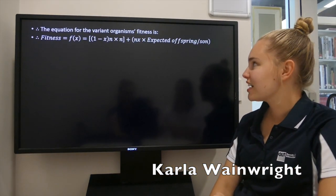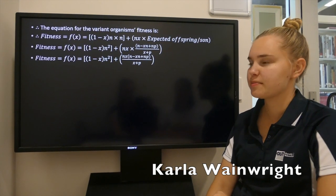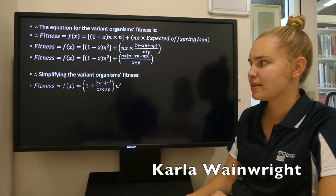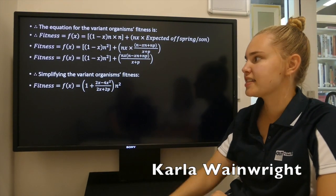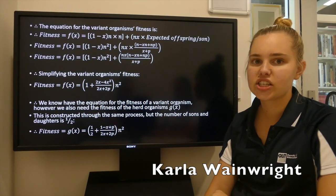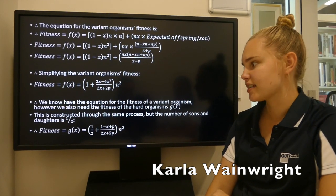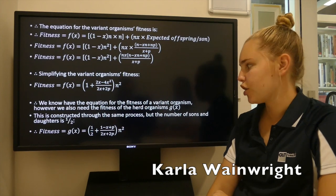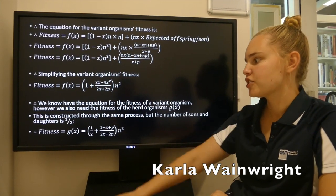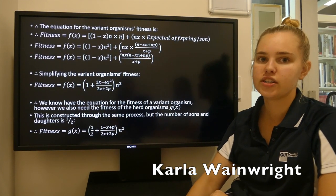As we now have the equation for the expected offspring per son, we can substitute it into the variant organism's fitness equation. If we expand and simplify, we get this equation as the variant organism's fitness, f(x). We will also need an equation to represent the herd organism's fitness, which we represent as g(x). This is constructed in the same process, but the number of daughters and sons is substituted in as one half. So g(x) is the new equation for herd organism's fitness.